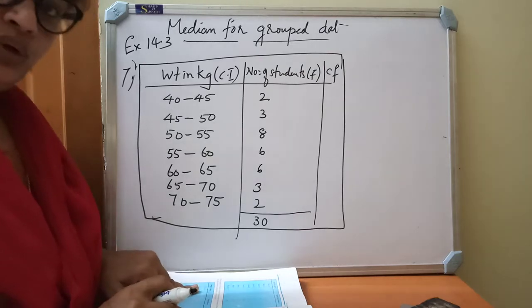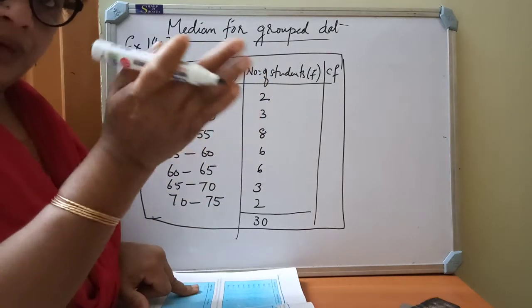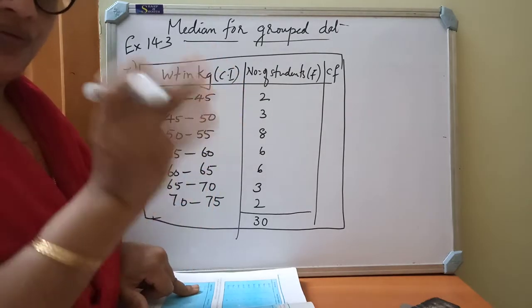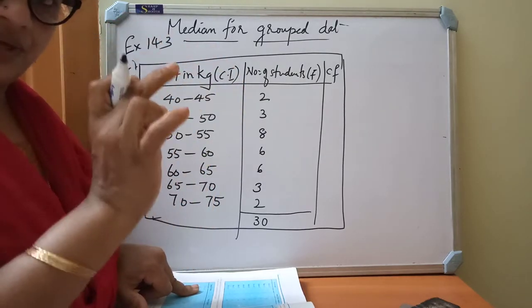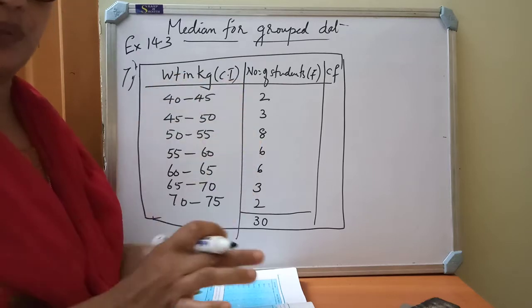So for that what you have to do, lower limit minus 0.5, upper limit plus 0.5. First you must do that class interval as exclusive form, then you have to proceed the median.